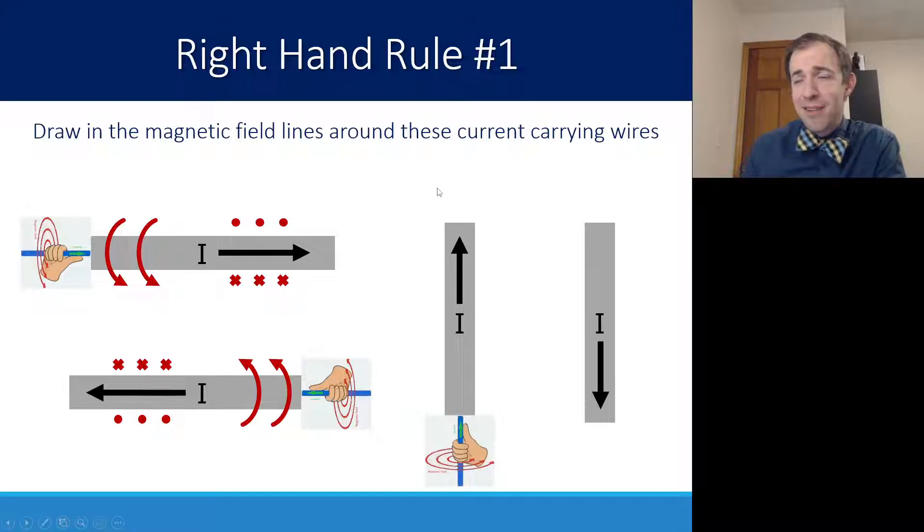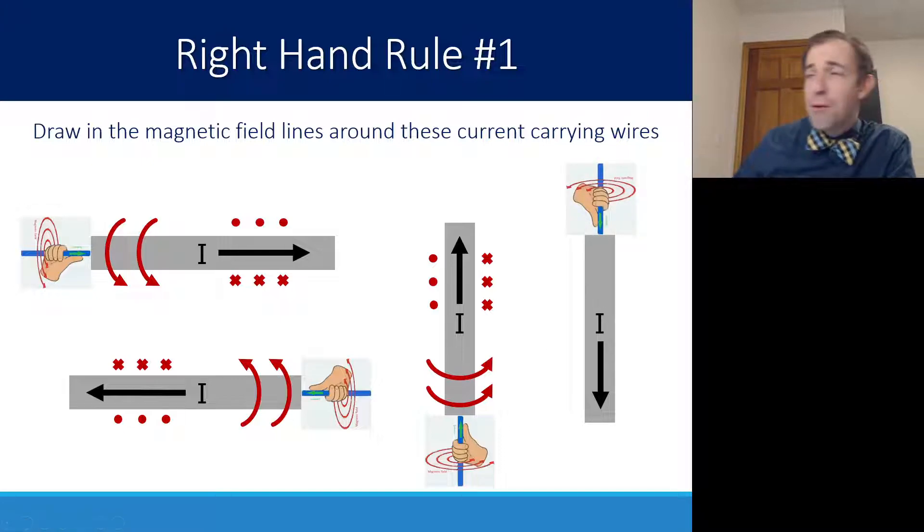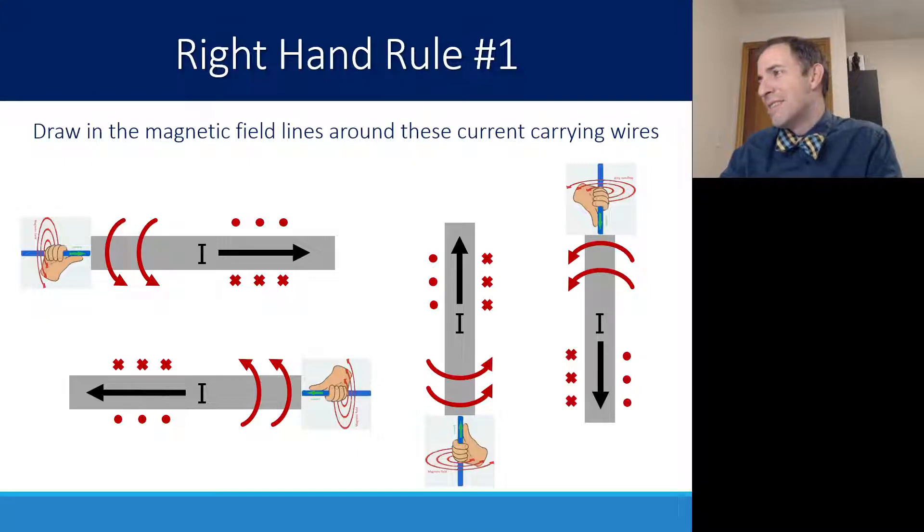Current going straight up here, we're going to see our fingers wrap around from the left to the right. So, out on the left, in on the right, and then current going down. My fingers are coming out on the right, in on the left. You could draw this swoop going this direction or curling the other way, as long as you have it drawing. I recommend drawing it over the wire, so you don't have to worry about trying to make it go under the wire.